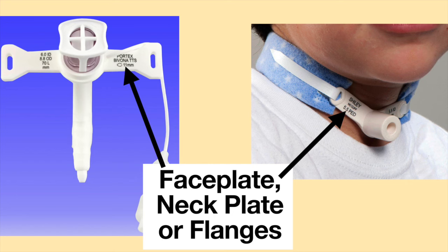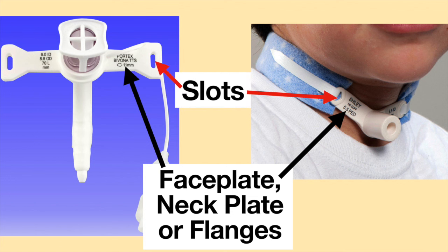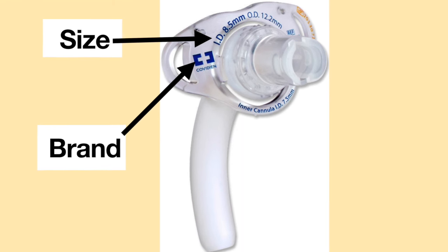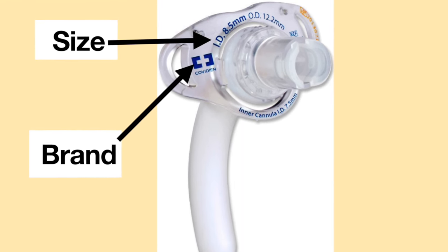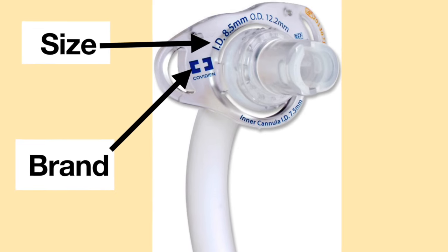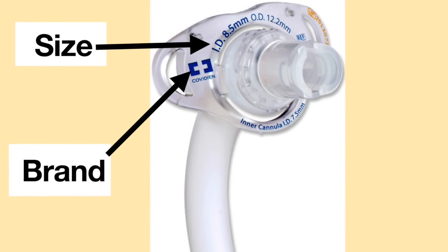The part of the tracheostomy tube which rests on the neck is called the face plate, neck plate, or the phalanges. This part has slots in it where the tracheostomy tube ties or holder attaches. Many tracheostomy tubes have printed on the face plate, neck plate, or phalanges information about the tracheostomy tube such as the size and brand.